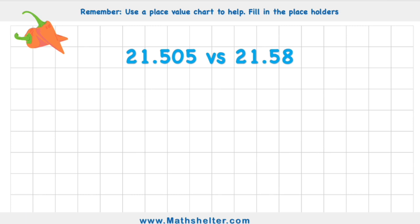An orange chili challenge then. This is a bit harder. I'm going to need a bigger place value chart with tens, ones, a decimal, tenths, hundredths, and a thousandths.